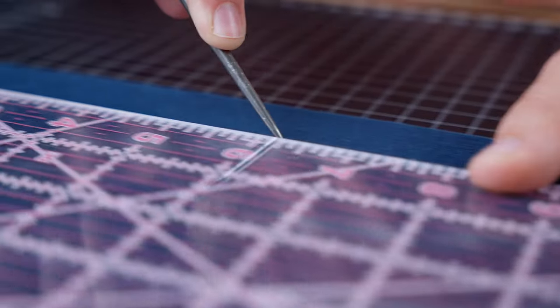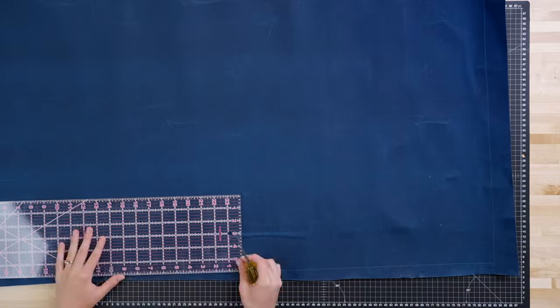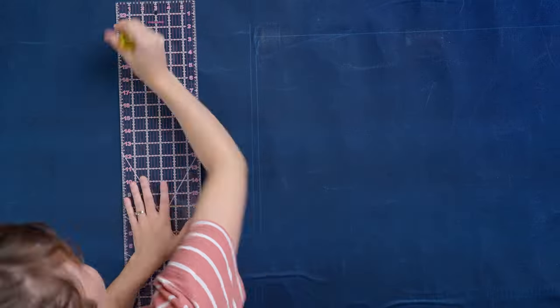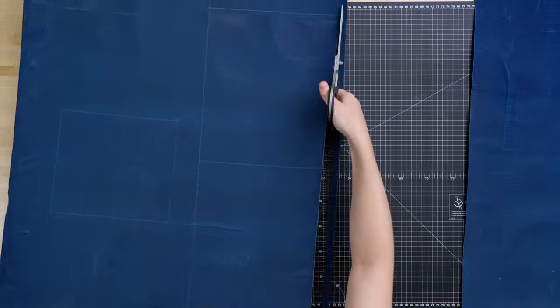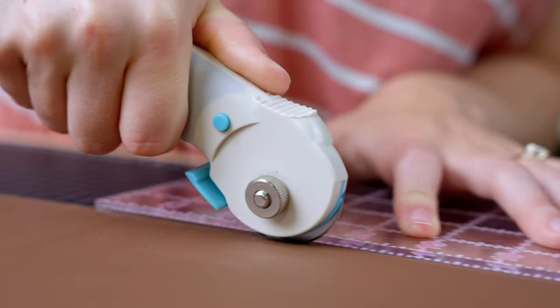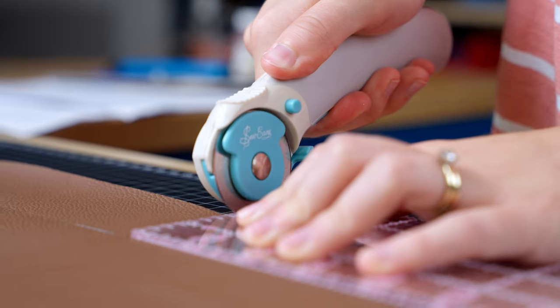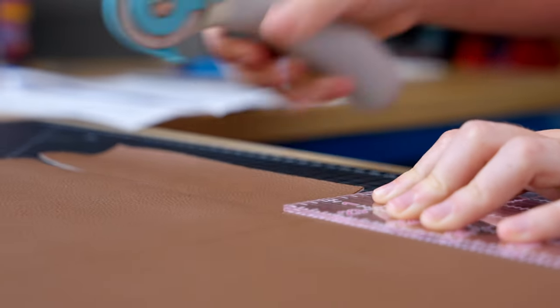The first thing that we're going to do is cut out all of our pieces for the project. We're going to be using an acrylic ruler and a scratch awl to mark and pattern on our Dura Wax, and then we're going to use fabric scissors to cut it out. For the vinyl fabric, we're going to be using our acrylic ruler and a rotary cutter on our cutting mat.